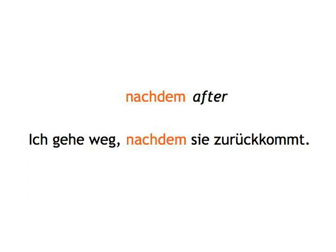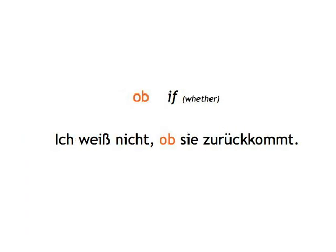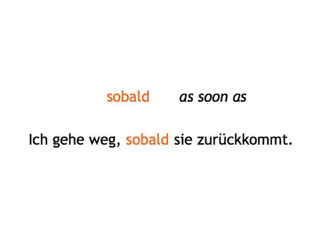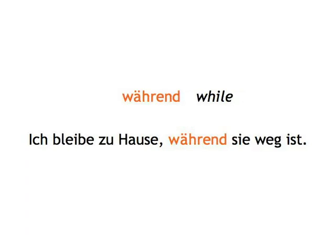Nachdem — after: Ich gehe weg, nachdem sie zurückkommt. I'll go away after she comes back. Ob — if/whether: Ich weiß nicht, ob sie zurückkommt. I don't know if she's coming back. Obwohl — although: Ich gehe weg, obwohl sie zurückkommt. I'm going away although she's coming back. Sobald — as soon as: Ich gehe weg, sobald sie zurückkommt. I'll go away as soon as she comes back. Während — while: Ich bleibe zu Hause, während sie weg ist. I'll stay at home while she's away.